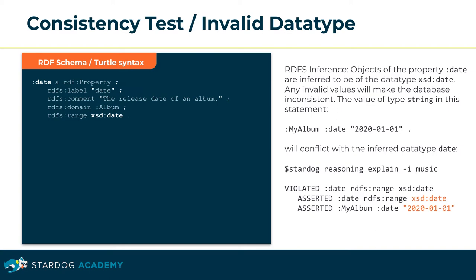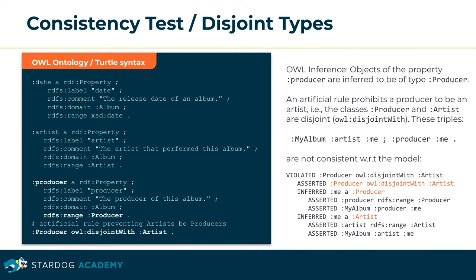The next example leverages inference rules of the Web Ontology Language OWL. Values of the property producer are inferred to be of type producer. For the sake of this example, let's define an artificial rule that prohibits a producer from being an artist at the same time. This means the classes producer and artist are disjoint, as stated by the OWL disjointWith predicate. The example statement asserts the same resource as both artist and producer of an album, which is obviously not consistent with the model. The CLI command 'stardoc reasoning explain' reports a violation of the disjointness axiom.